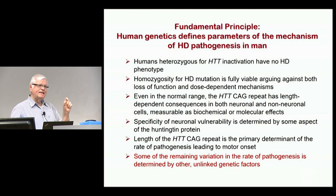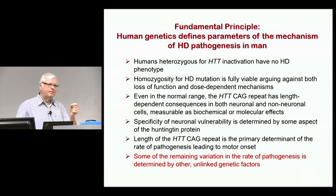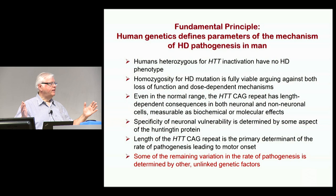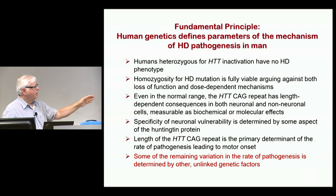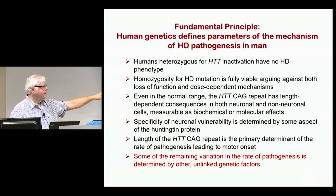The specificity of the cells that are dying — the fact that muscle cells are not dying even though the protein is made there, while the medium spiny neurons in the striatum die very early and cells in the cortex die a little later — says that there's something about the protein or the gene that creates cell specificity beyond simply being expressed somewhere. The length of that CAG is the primary determinant for what's going on.